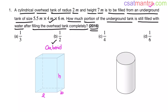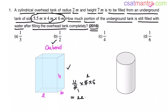Now, the cuboid volume is given. This tank volume is 5.5 into 4 into 6. I am writing 5.5 as 11 by 2 — it makes our calculation easier. So 11 by 2 into 4 into 6. That gives us 22 into 6, which equals 132.